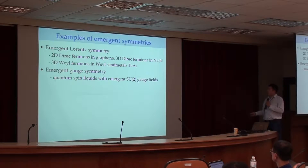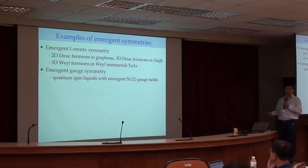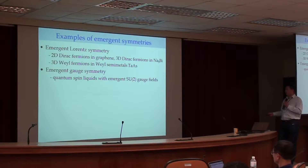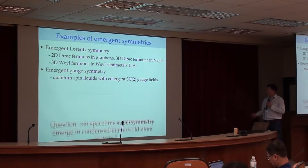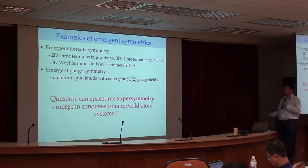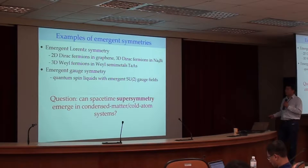There are also emergent gauge symmetries - emergent gauge symmetry can occur in spin systems with emergent SU(2) gauge fields or emergent U(1) gauge fields. Today I will focus on this question: can spacetime supersymmetry emerge in condensed matter or cold atomic systems?